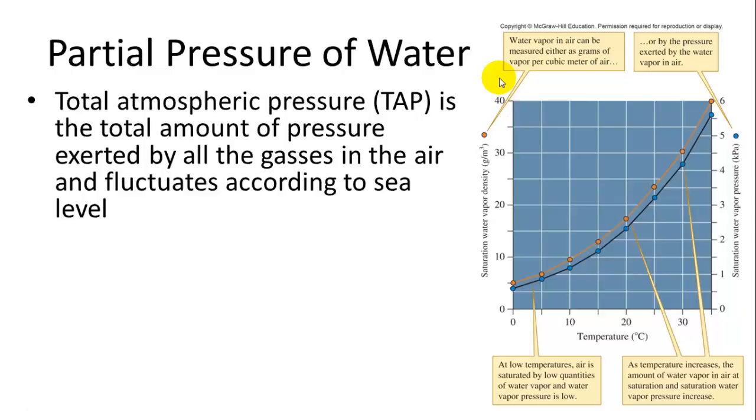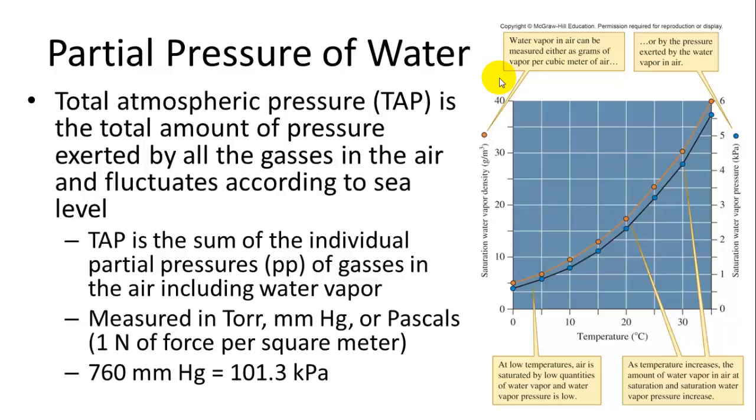Total atmospheric pressure is the total amount of pressure exerted by all gases in the air. So there are a bunch of different gases. Most of them are nitrogen, but there's oxygen, carbon dioxide, and other things. And it fluctuates according to sea levels because the closer you are to the center of the Earth, the greater the effect of gravity. So total atmospheric pressure includes water vapor and all those other gases in the air. And it's measured in torr or in millimeters per mercury or pascals. And a pascal is one newton of force per square meter.